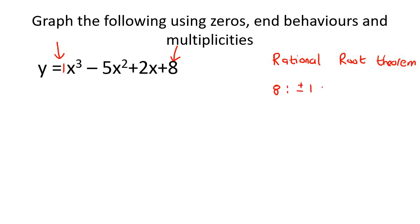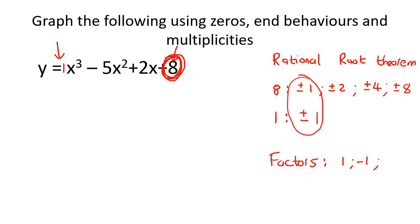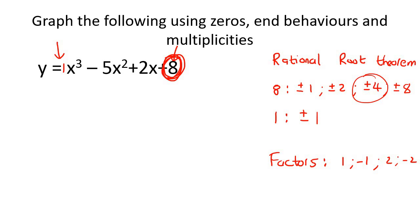The factors of 8 would be plus or minus 1, plus or minus 2, plus or minus 4, and plus or minus 8. The factors of 1 are just plus or minus 1. The rational root theorem says to divide all factors of the constant by all factors of the leading coefficient, giving possible roots of ±1, ±2, ±4, and ±8.